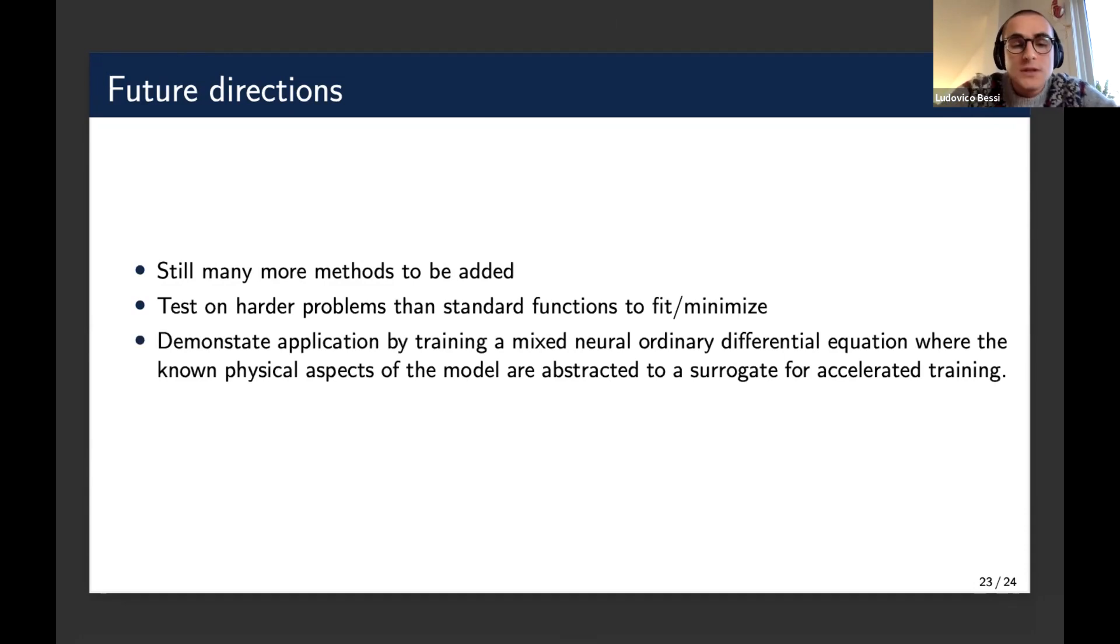And also, we could mix this with neural ordinary differential equations. So maybe, for example, the physical aspects are approximated, are abstracted away with using a surrogate, and that will accelerate the training of the neural differential equations. So this still needs to be done, but all the pieces are there, I believe, to be doing this in the next future, in the near future. And hopefully, I will be able to write everything down in a neat paper.